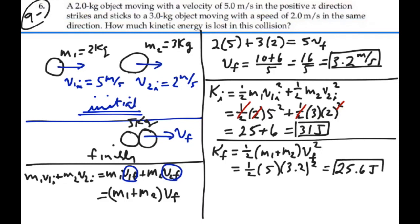We want to find how much we lost. The kinetic energy we lost is how much we started with minus how much we ended up with. So that's our initial minus our final: 31 minus 25.6 is 5.4 joules. We lost 5.4 joules in this perfectly inelastic collision.